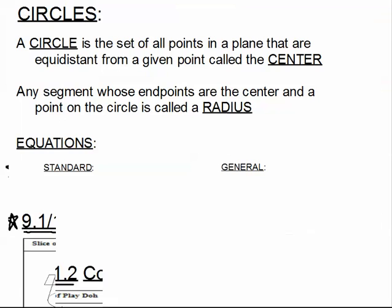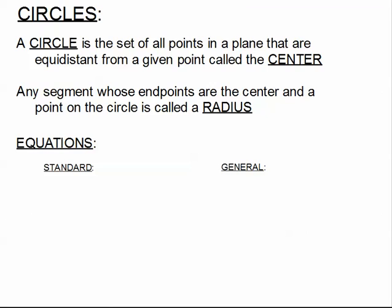Let's move on to the definition of a circle. A circle is the set of all points in a plane that are equidistant from a given point called the center. Equidistant means the same distance. So we're talking about all the points on a two-dimensional plane that are exactly the same distance from the center, which generates all the points on a circle.